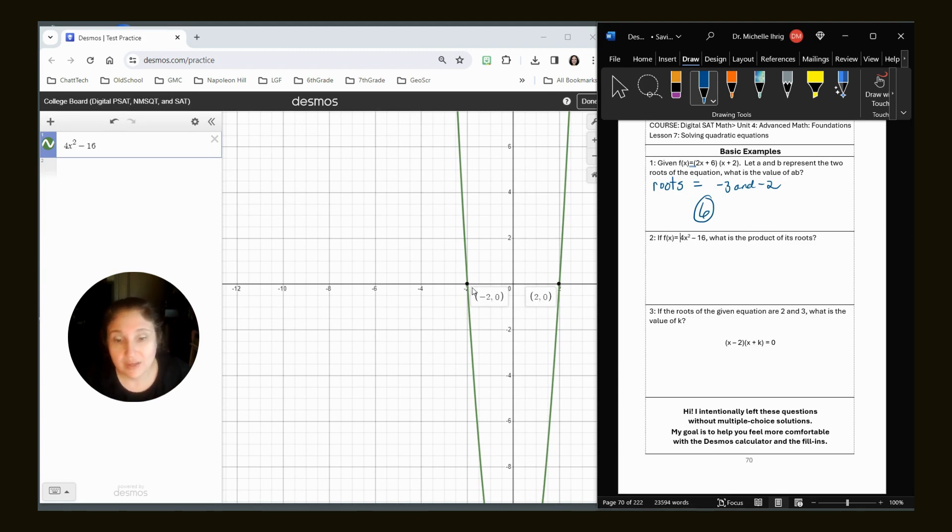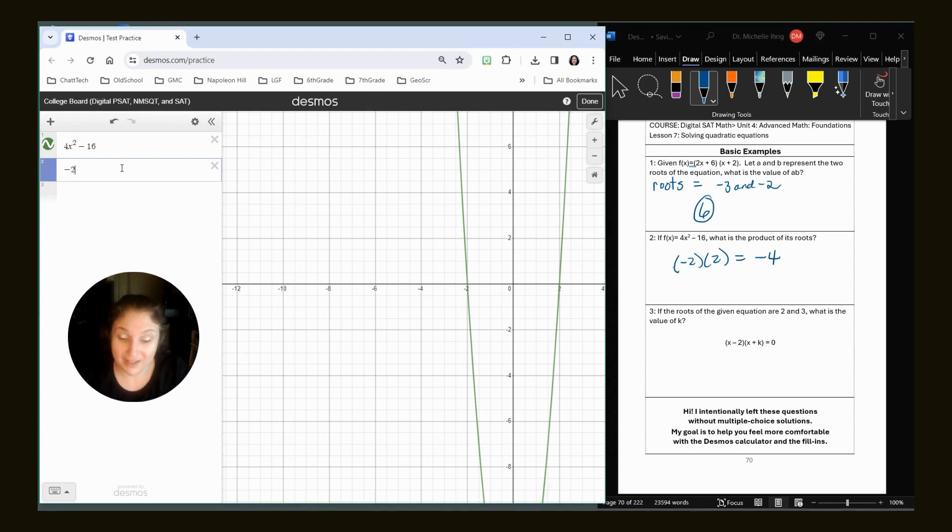What is the product of the roots here? We have negative two. And here we have positive two. Product means multiply. So we've got negative two times positive two is negative four.